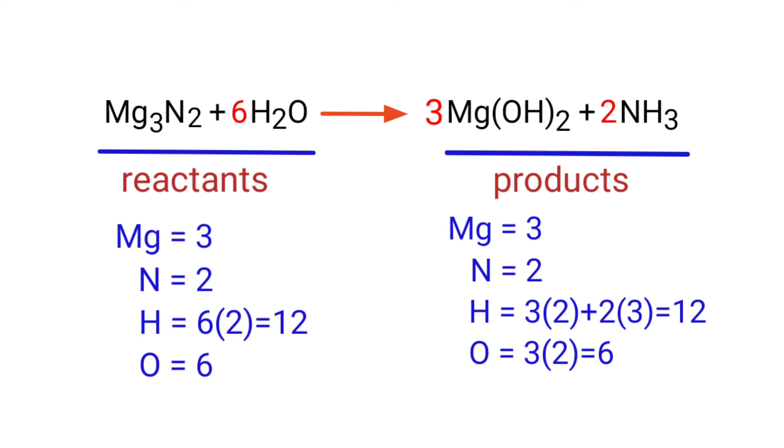There are 3 magnesium atoms, 2 nitrogen atoms, 12 hydrogen atoms, and 6 oxygen atoms on both sides.